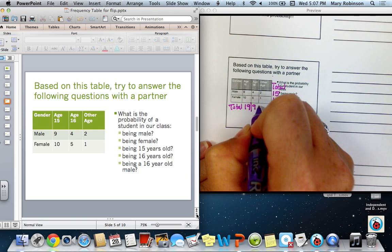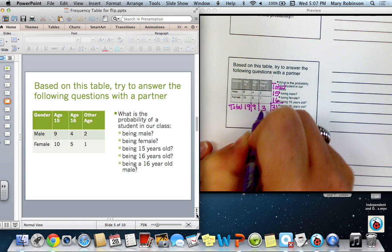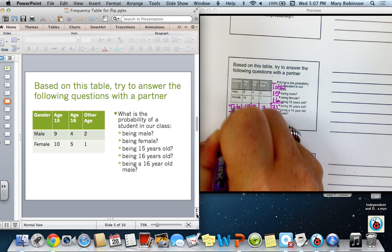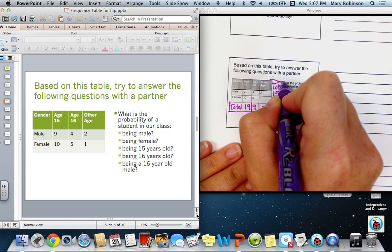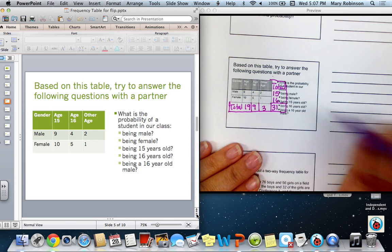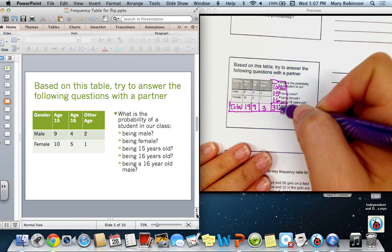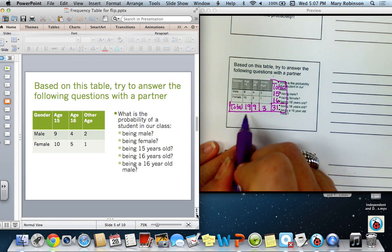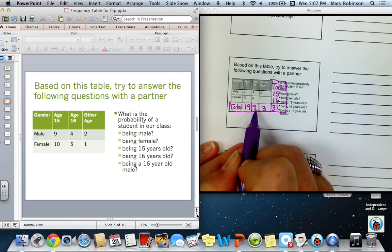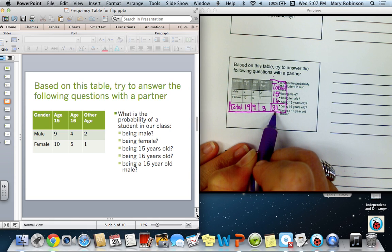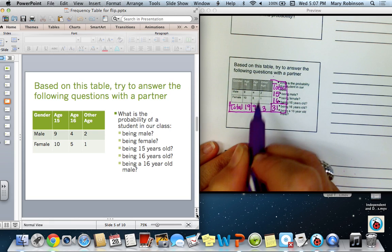If we then total the columns for age 15, there were 9 males and 10 females age 15 for a total of 19, 4 males and 5 females of age 16. That's a total of 9. And for other age, 2 plus 1 is 3. Please notice that the totals vertically, 15 and 16 total to 31, as well as horizontally. 19 plus 9 plus 3 should also equal 31. If these numbers do not both total here, you've made a math error somewhere.